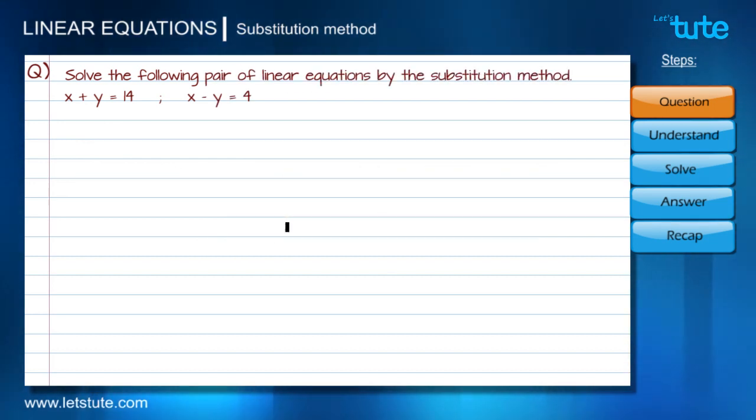Here is a question: solve the following pair of linear equations by the substitution method. The equations are x+y=14 and x-y=4. We are going to solve this problem using particular steps, so first of all we'll understand this question.